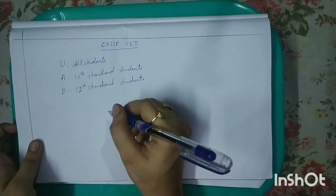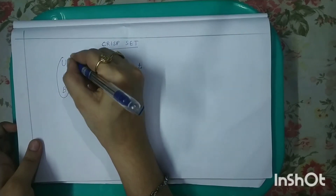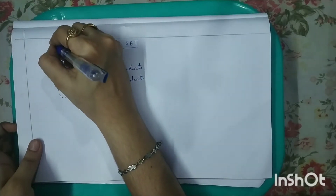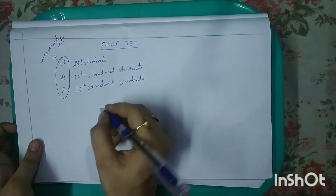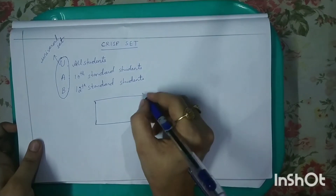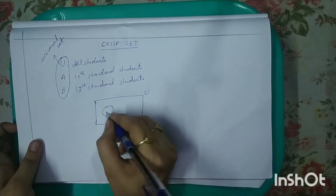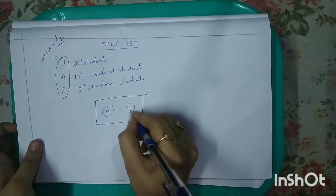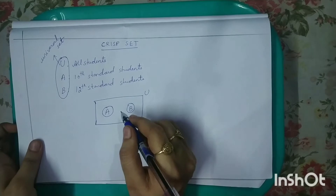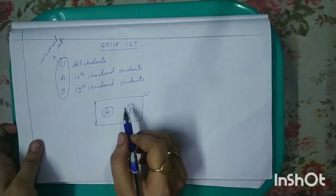Now let me draw the diagram for these three sets. The three sets are U, A and B, where U is the universal set. Inside the universal set U, there are two sets: set A and set B. We can see that there is nothing common between A and B — that is, there is no intersection between them.